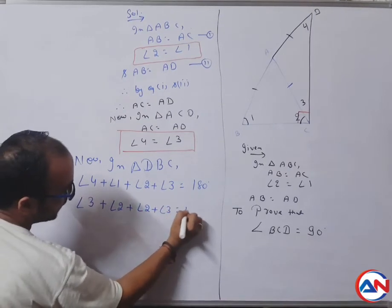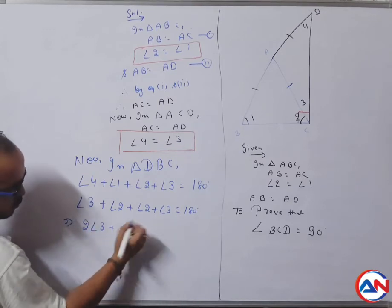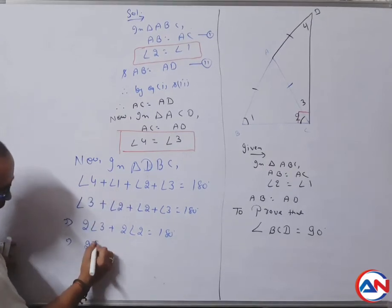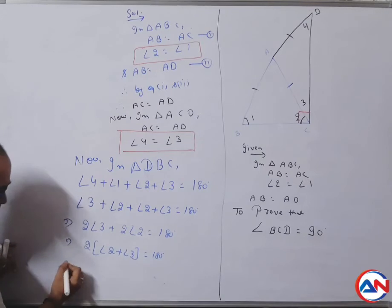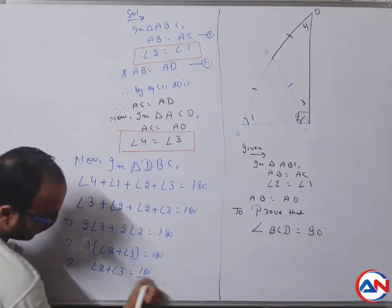Angle three plus angle three equals to two angle three. Angle two plus angle two equals to two angle two, equals to 180 degrees. Two is common. Therefore, angle two plus angle three equals to 180 degrees divided by two, which is 90 degrees.